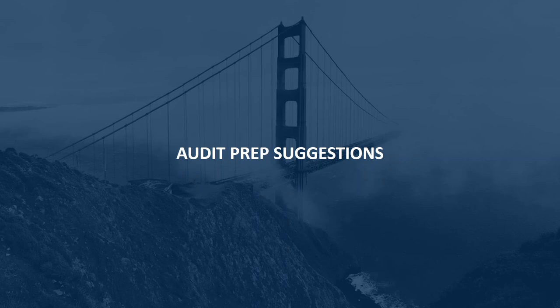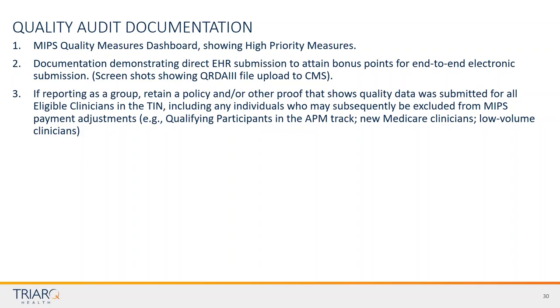Audits — we hate to think about them, but they are a fact. Some of our folks have been audited for meaningful use. We'd like to provide suggestions: anyone I've worked with in the MU world, we always talk about your MU audit folder. Make sure you're preparing for the audit now, just in case. If you get audited, what are they going to be looking for? These are suggestions — I highly encourage you to do your own homework — but at a bare minimum, these are things to be thinking about.